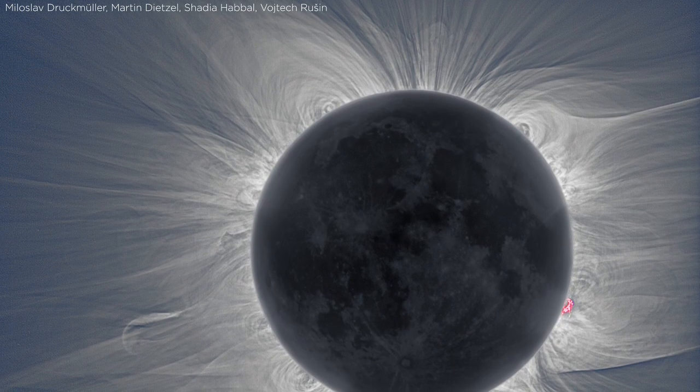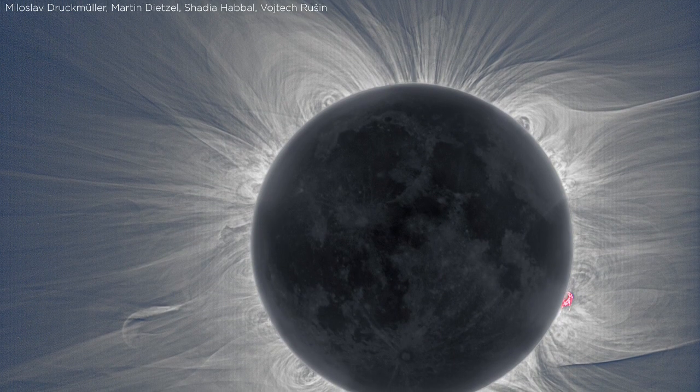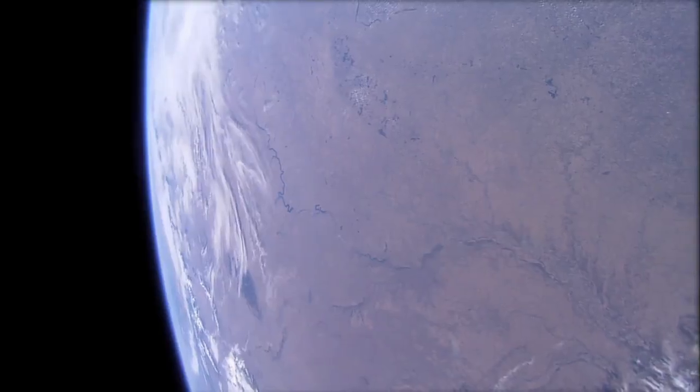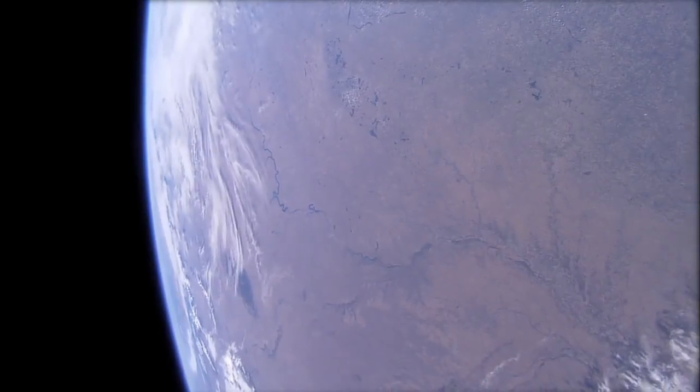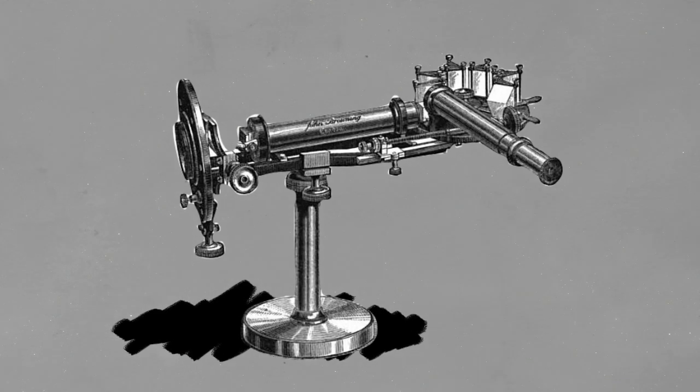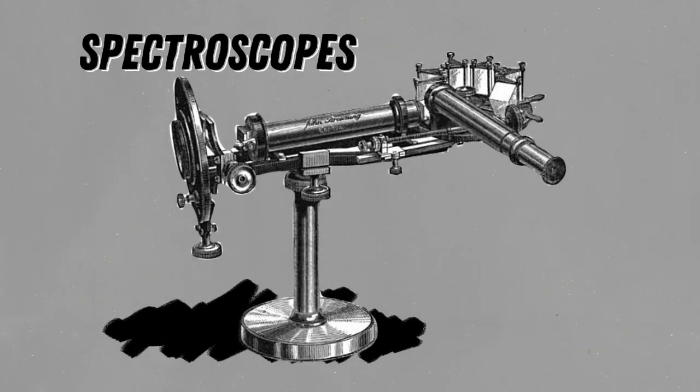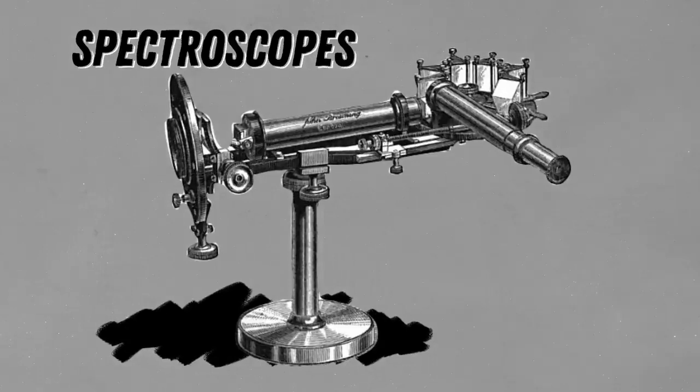To understand how this mystery was discovered, it helps to know how scientists started studying the chemical properties of materials on Earth. In the early 1800s, instruments named spectroscopes were invented to identify materials that emit light when heated.